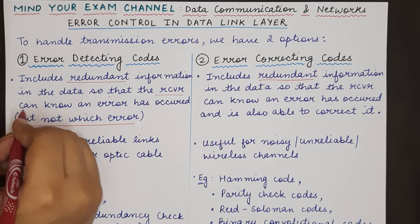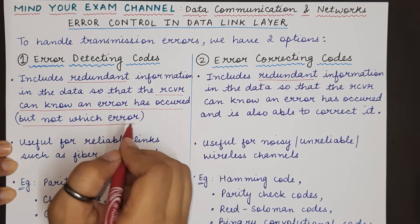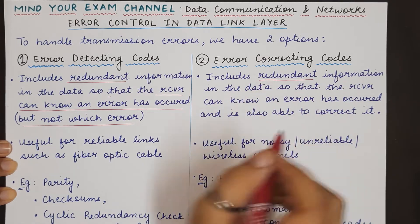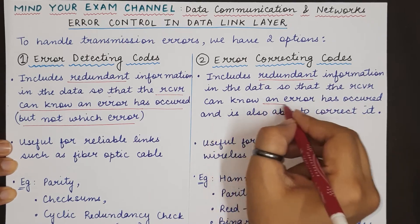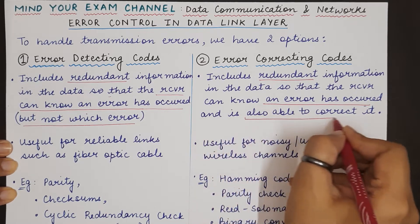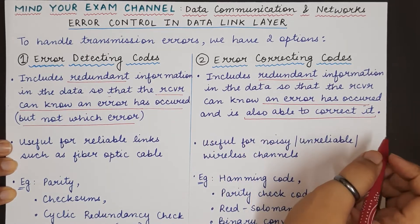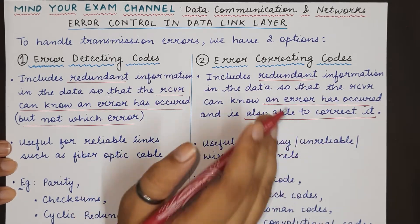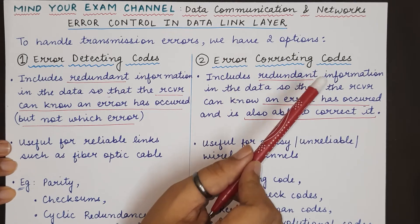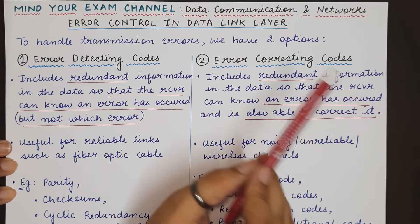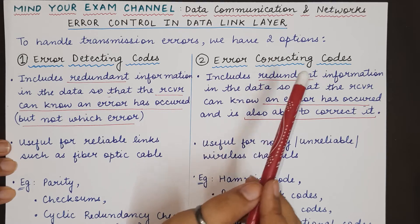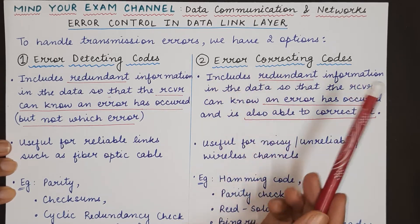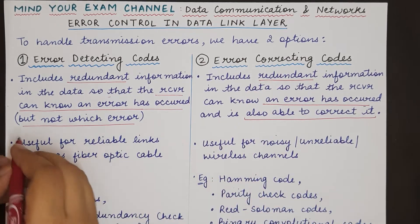So with error detecting codes, the receiver can only know that some error has occurred. In contrast, with error correcting codes, the redundant information included is sufficient for the receiver to know that an error has occurred and also to know what the original data was, so that the error can be corrected. The receiver can correct the error that has happened — the error is detected and can be reversed and corrected by the receiver.